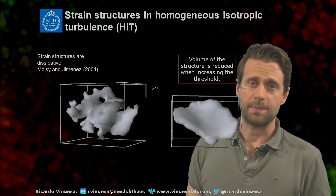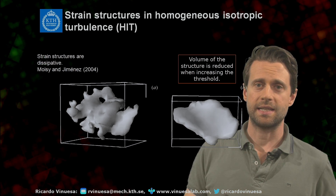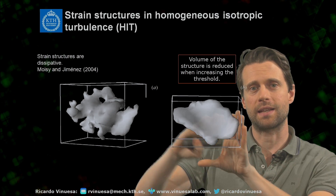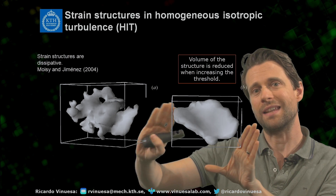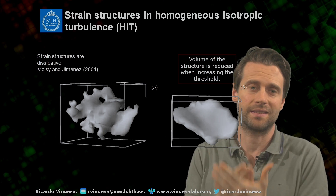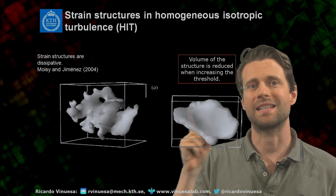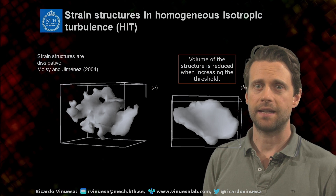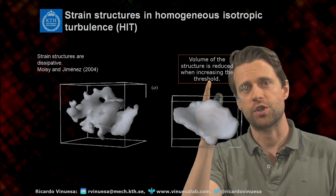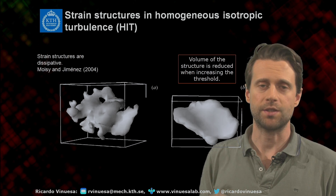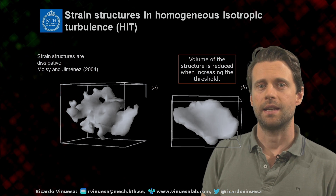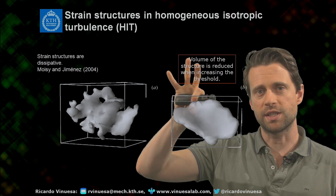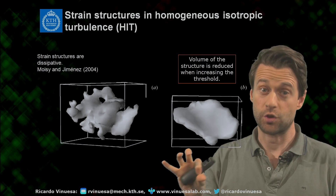Another type of extractor that can be identified in homogeneous isotropic turbulence is a less worm-like feature — it's actually more like sponges or plates, more like flat-type configurations. These are, in fact, strain extractors. These extractors are more closely connected with dissipation. And as before, if the threshold gets larger, the extractors will become smaller. So there is an interesting assessment when looking at the types of extractors in homogeneous isotropic turbulence: vorticity is energy-containing, while strain is associated with dissipation.